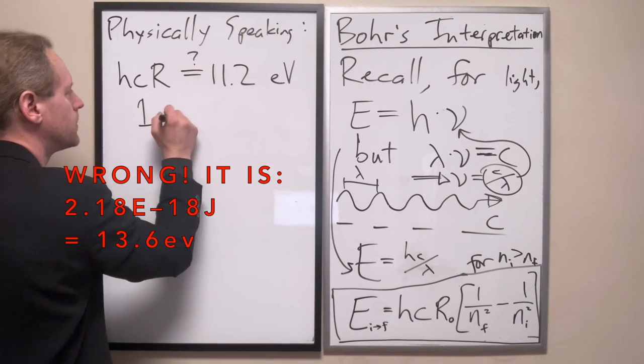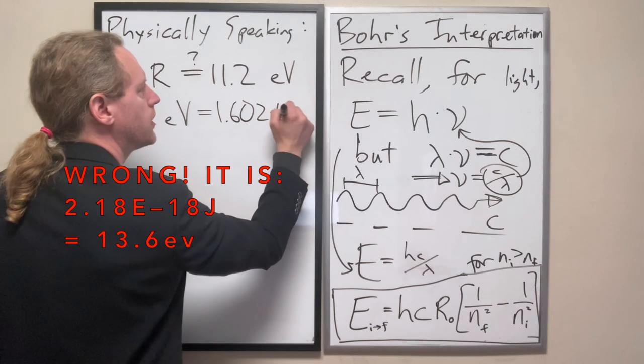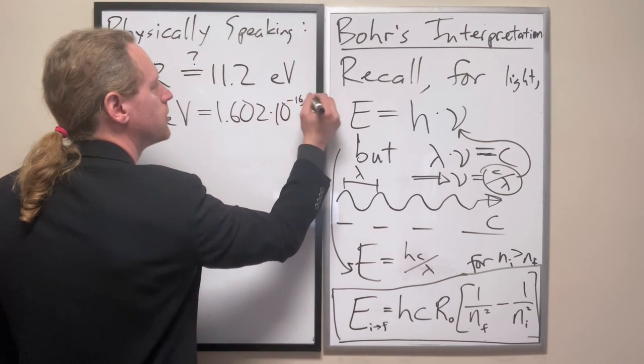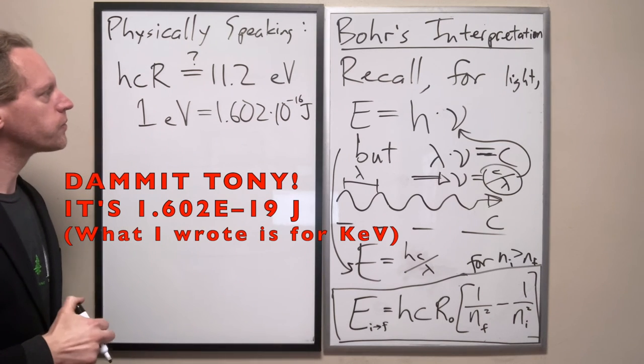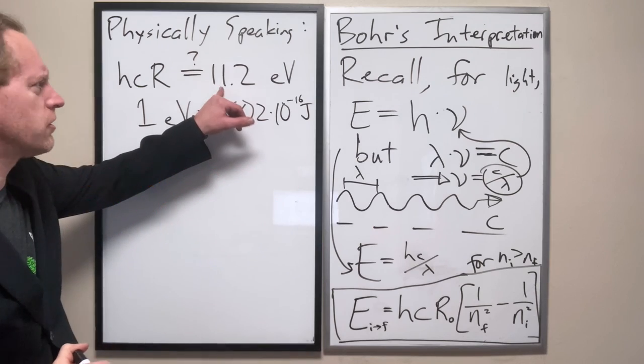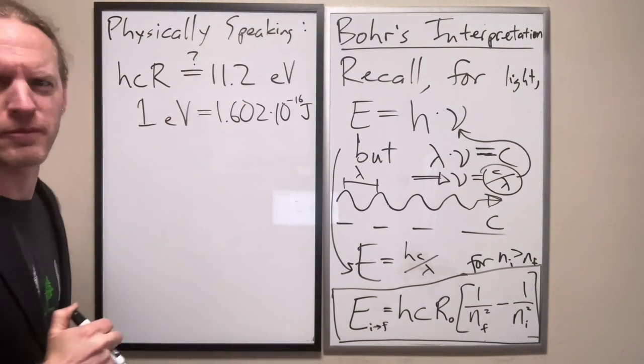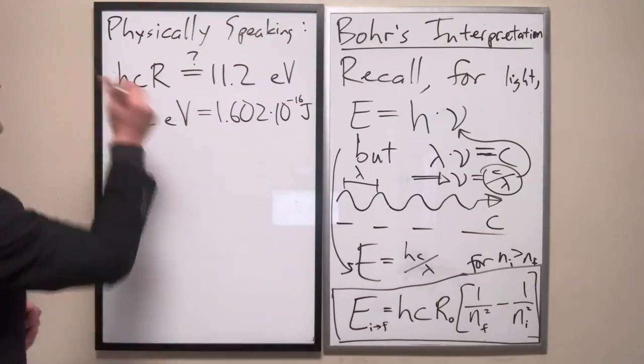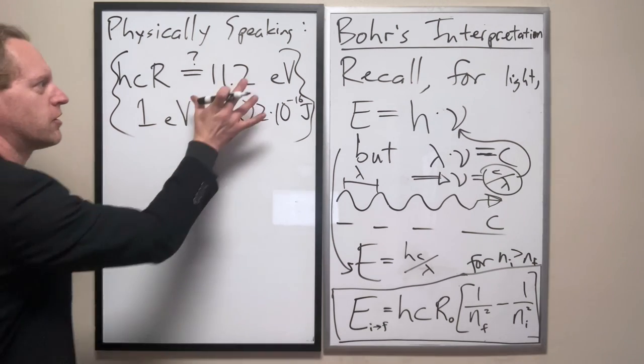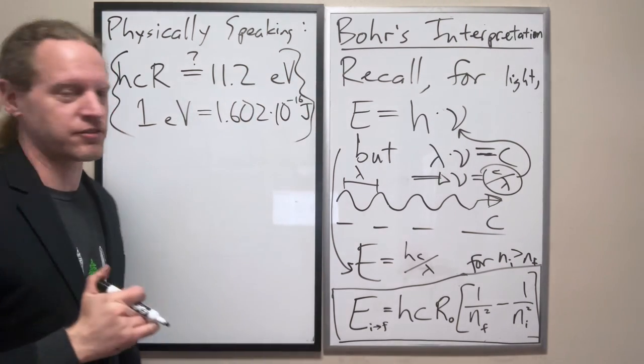Now, an EV, to be clear, is 1.602 times 10 to the minus 16 joules. I don't know why I'm really questioning myself on this. That doesn't look right to me, but my calculations just told me it is, so I don't know whether I should trust my calculation or my instinct. Anyway, test that, find out, but it's a nice, easy thing to be able to write it in EVs because it turns out that writing in electron volts is a lot easier than writing in joules.